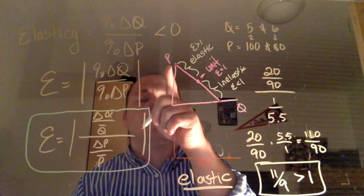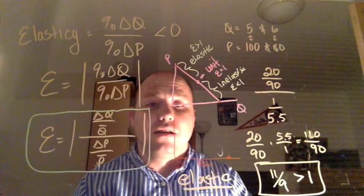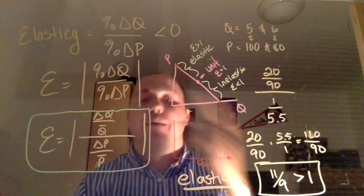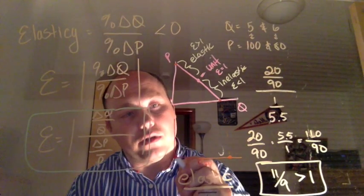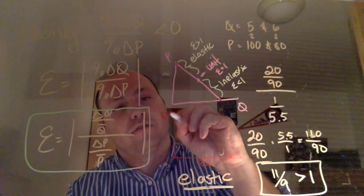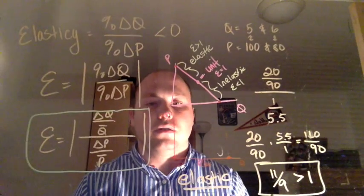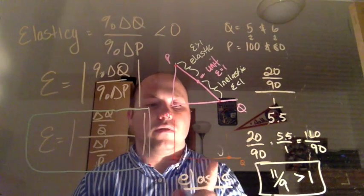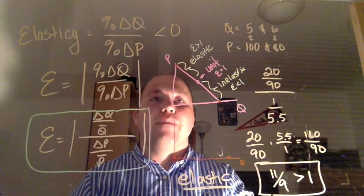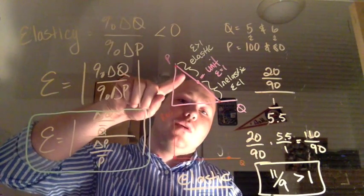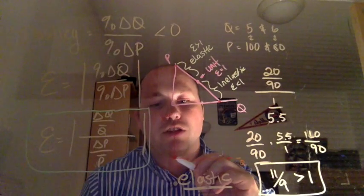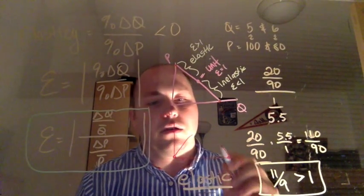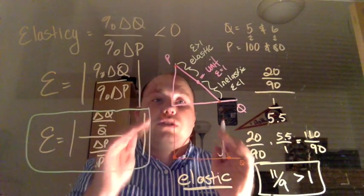What happens if I set my price really high to where I'm selling it so high, I'm actually not selling any. Well, you know what? At that point, I also don't have any revenue, right? So we're going to make this revenue and quantity. So what happens is as we start to lower our price on the top and as we start to raise our price on the bottom, we're actually gaining more revenue, right? So we're increasing our revenue.